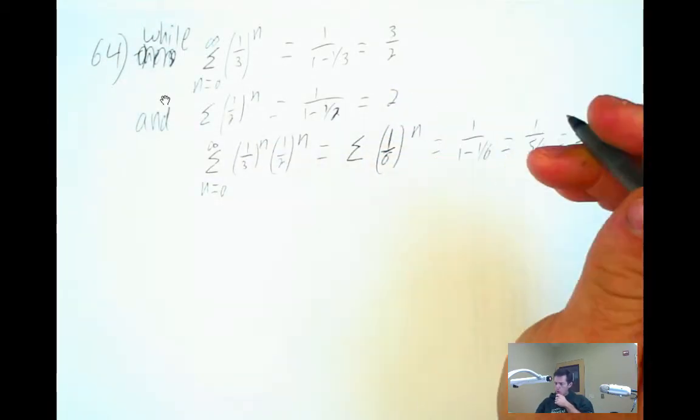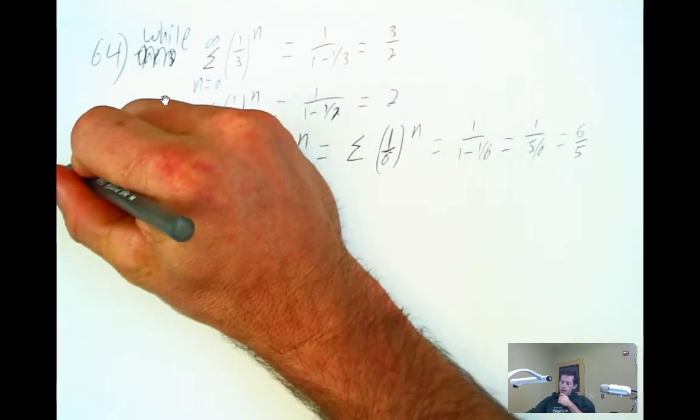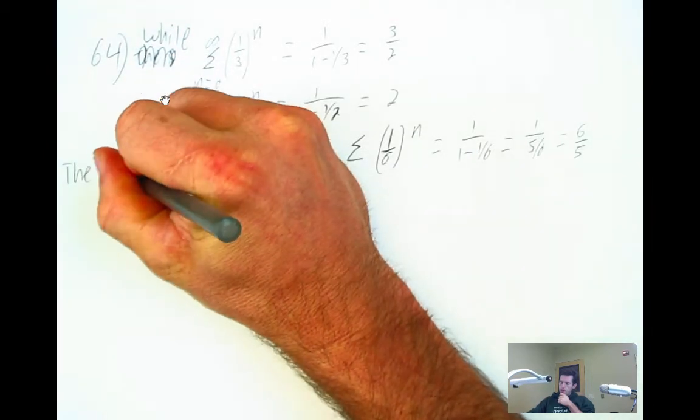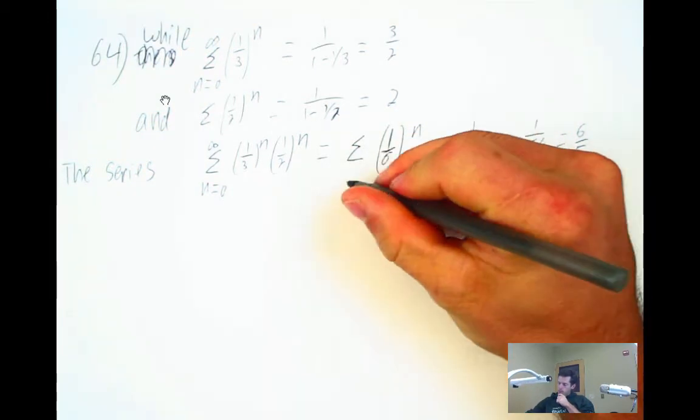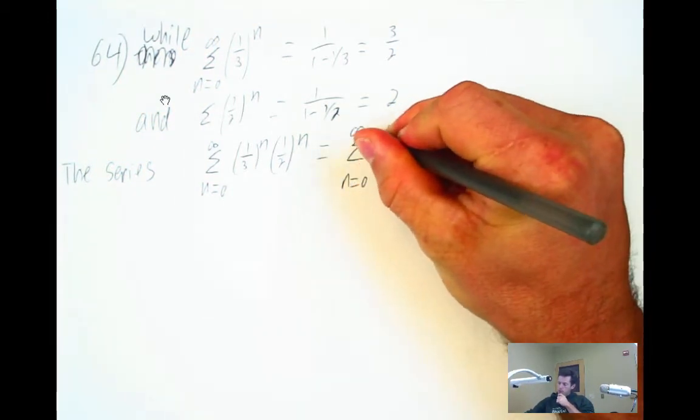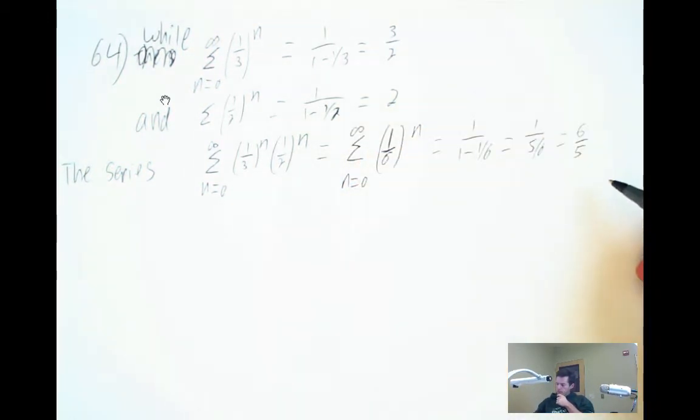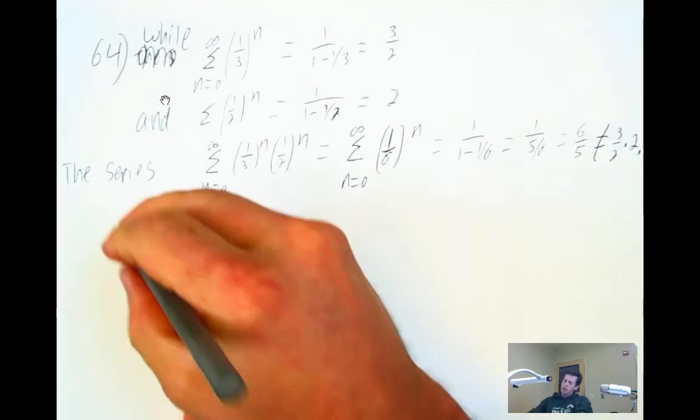So that's the sum from zero to infinity of one-sixth to the nth power, one over one minus one sixth, or one over five sixths is six fifths, is not equal to three halves times two. Because that would be three and three is not equal to six halves.